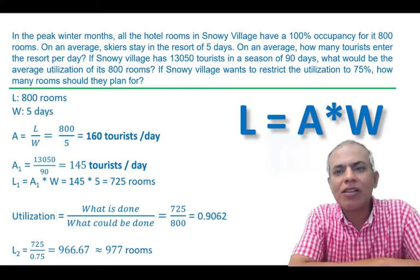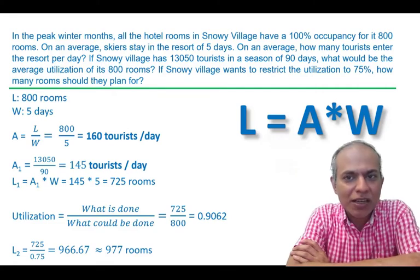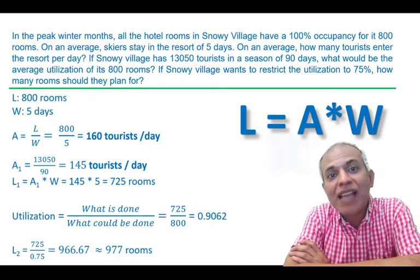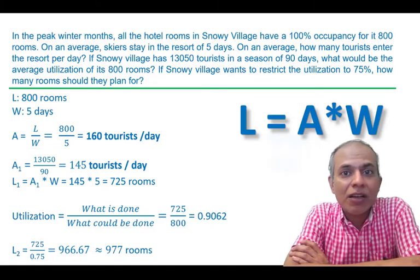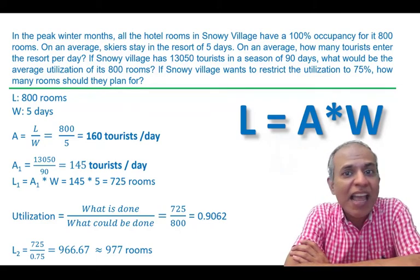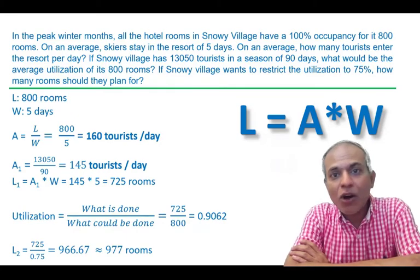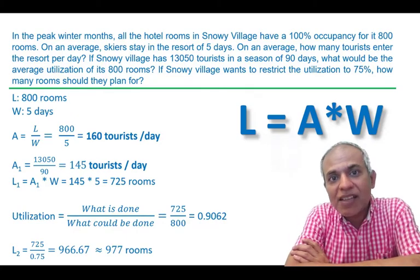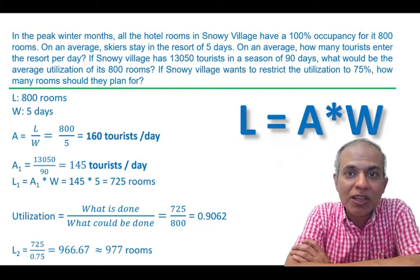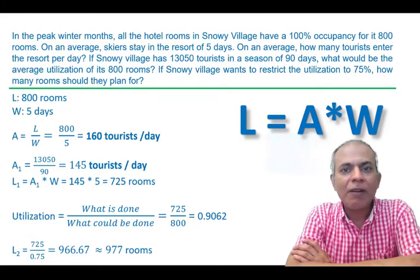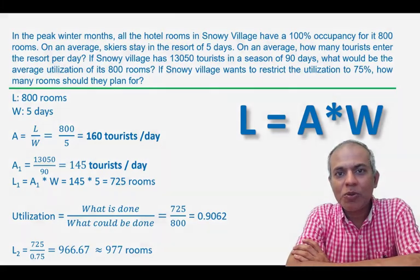This was a slightly more involved numerical problem using Little's Law. The key idea is that we're working on the basis of averages — not that exactly 145 tourists arrive every day, or that every tourist stays exactly five days. These are averages, and all averages have peaks. Sometimes we plan for lower utilization so that we can accommodate those peaks.